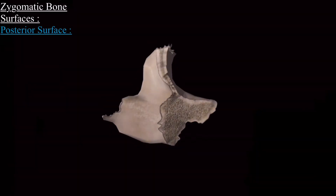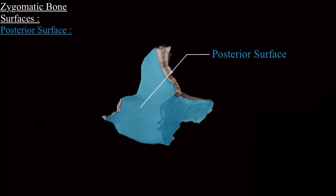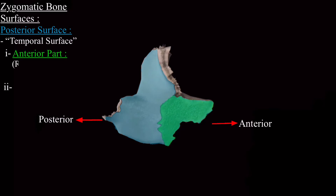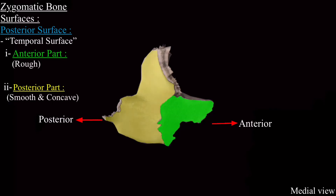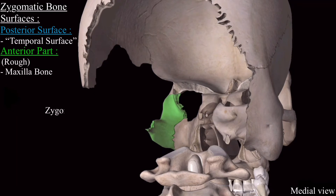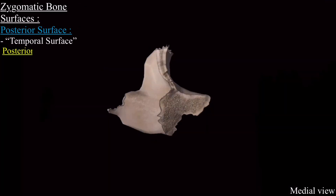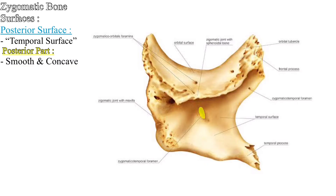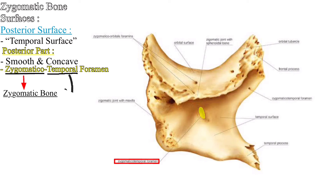Next is the posterior surface, also called the temporal surface. The posterior surface is divided into two parts: the anterior part, which is rough, and the posterior part, which is smooth and concave. The anterior rough part articulates with the maxilla bone. On the posterior smooth part, a foramen called the zygomaticotemporal foramen is present, on the temporal surface of the zygomatic bone.